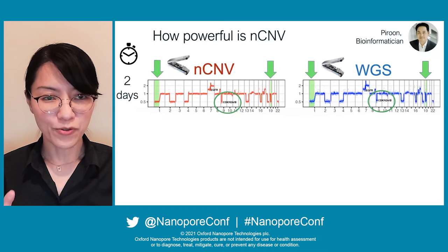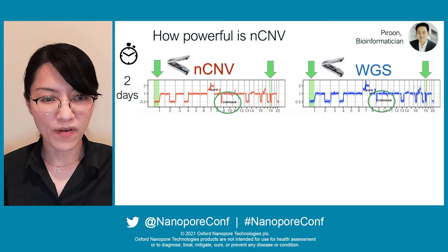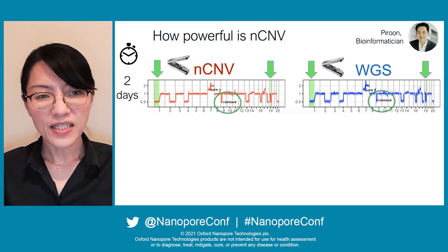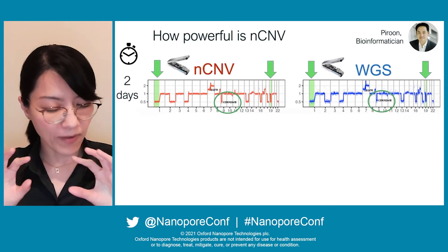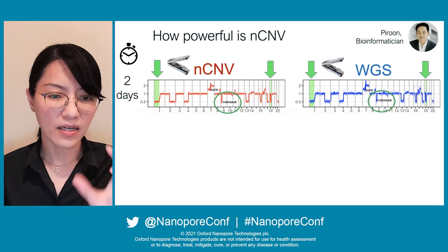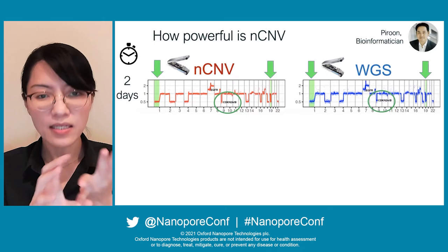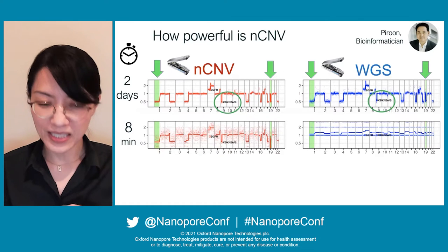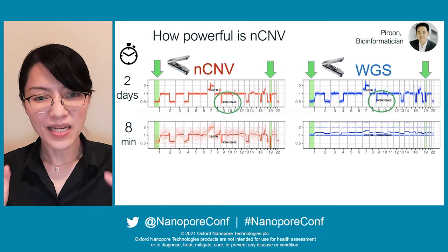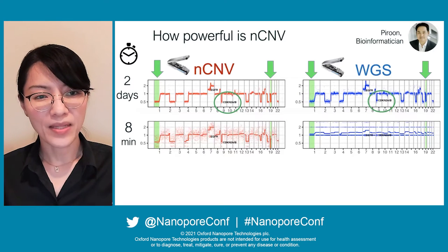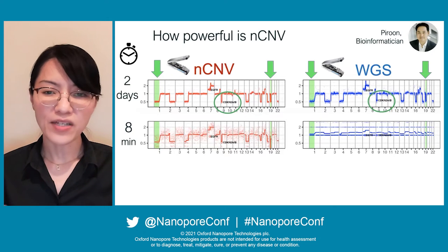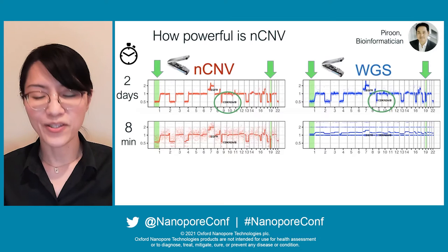This slide shows the power of NCNV. On the left-hand side is the CNV profile from the NCNV method, and on the right from genomic DNA sequencing. After two days we got very similar profiles. You can see on the green arrow and green circle: we found 1p deletion, 19q deletion, and CDKN2AB deletion. Importantly, just eight minutes after nanopore sequencing we already had the answer using NCNV, whereas with genomic DNA after eight minutes we cannot observe the CDKN2AB deletion.